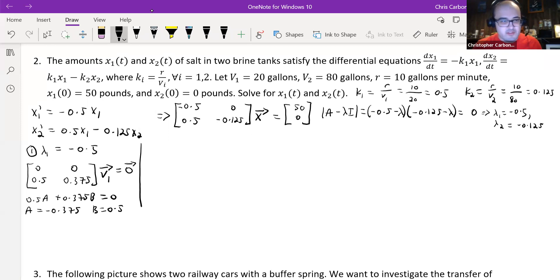Likewise, for case number two. Our second eigenvalue for this was negative 0.125. Subtracting that from our main diagonal here, we are going to get negative 0.5 minus negative 0.125, so that'll give us negative 0.375. That's 0, a 0 here, and this is 0.5 times our second eigenvector v₂ is equal to the 0 vector again.